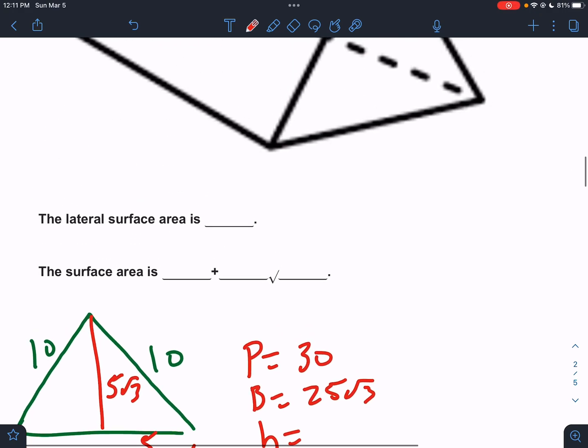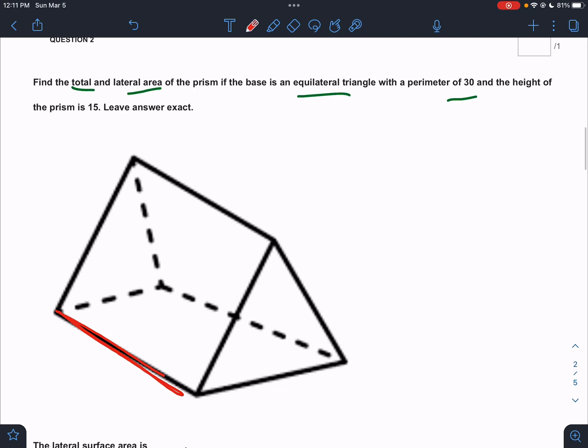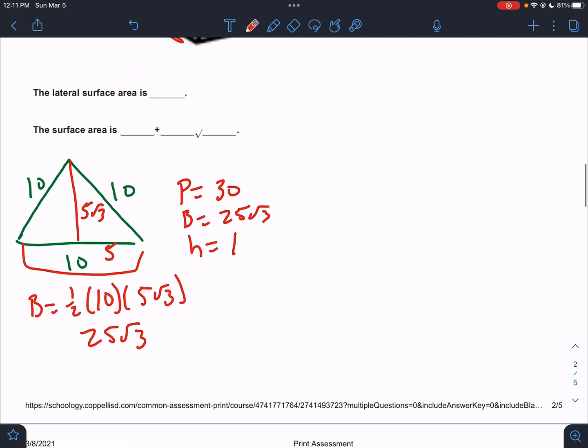So capital B is 25 root 3. And then the height, the height is the distance that connects the two. And they actually tell us in the problem that the height of the prism is 15. So we know that number is 15.